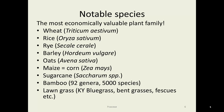Notable species: as already mentioned, this is the most economically valuable plant family of any that we have. It produces wheat, rye, rice, barley, oats, maize, sugarcane, and sorghum. Also bamboo, which is used for many different reasons, and then our lawn grasses — Kentucky bluegrass, bentgrasses — and much of our prairie species are grasses.